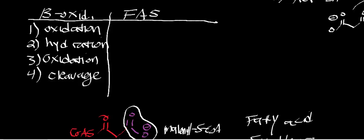Fatty acid synthase is essentially going to reverse this. Beta-oxidation's organic mechanisms are actually quite simplistic, and in general, mechanisms that are easy tend to have easy reverses. So what we're going to do now is talk about what those reverse steps would be called. The first step of fatty acid synthase will essentially be the reverse of the cleavage step of beta-oxidation — so this step is going to be a condensation reaction.